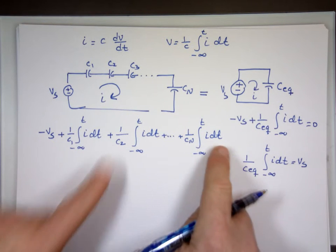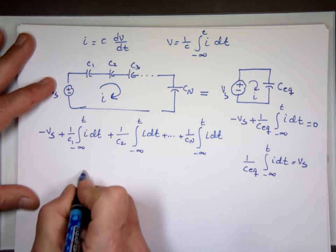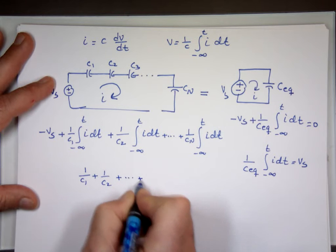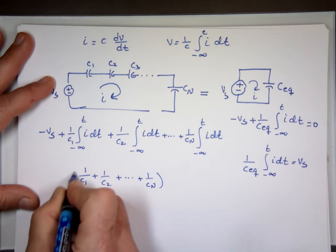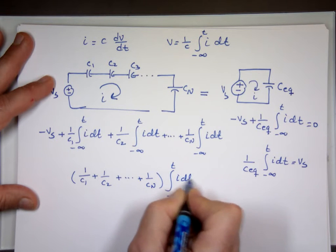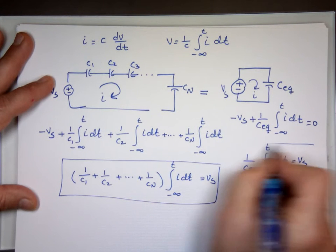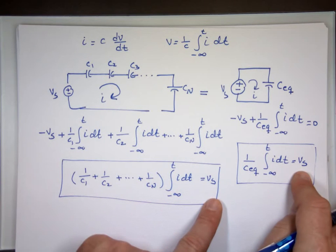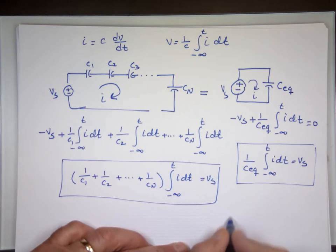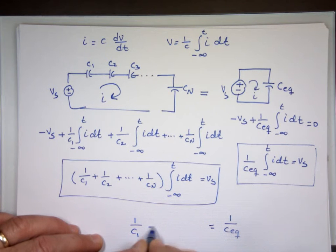Notice the current i is the same for all of them — you're going through one branch, the current won't change. So if you factor out the integral, you get (1/C1 + 1/C2 + 1/CN) · ∫i dt = VS. And you want this equation to equal the other one. Well, VS is the same, the current is the same, the integral is the same. That leaves us with: 1 over C equivalent equals 1/C1 plus 1/C2 plus 1/CN.